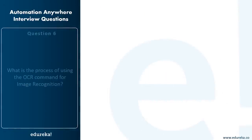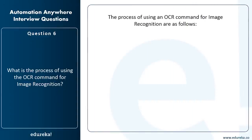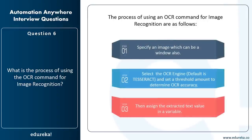What is the process of using an OCR command for image recognition? The steps are: Step 1 — specify an image, which can be a window; Step 2 — select the OCR engine (by default it is Tesseract) and set the threshold amount to determine OCR accuracy; Step 3 — assign the extracted text value to a variable so you can display the output in a message box or store it in a file.